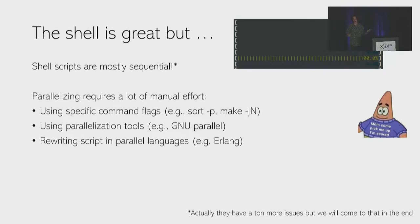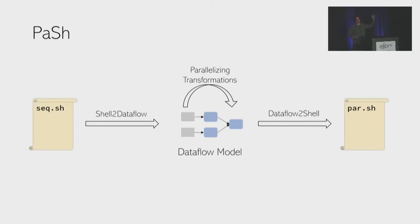So enter PaSh. PaSh is a shell-to-shell compiler that exposes latent data parallelism in shell scripts. It does so by translating shell scripts to a data flow model abstraction, parallelizes those data flow graphs, and then turns them back to shell scripts. That allows it to work on top of any shell, because it just produces a shell script you can run on your favorite interpreter like bash.